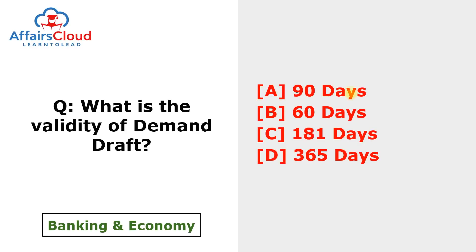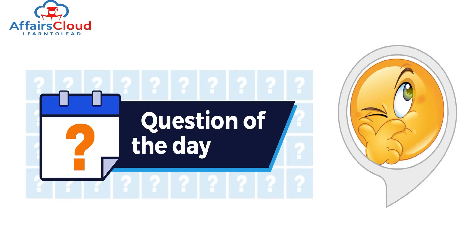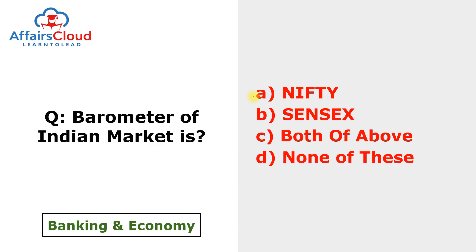Question of the day from 22nd April 2022: what is the validity of a demand draft? As per RBI guidelines, a demand draft is valid for three months or 90 days from the date it was issued by the bank. After three months, you can revalidate the demand draft upon a written request to the issuing bank.